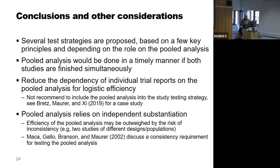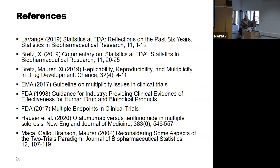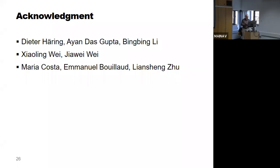The efficiency of the pooled analysis may be outweighed by risk of inconsistency — for example, if the two studies have slightly different designs or recruit from different regions. There is a paper from colleagues discussing a consistency requirement for testing the pooled analysis. Throughout this presentation, the focus was on multiplicity aspects rather than what type of statistical model to use for the pooled analysis. References are listed, and the speaker thanks the clinical teams who brought the case studies — including the ophthalmology case, the multiple sclerosis case, and a third ongoing case whose indication cannot yet be disclosed.